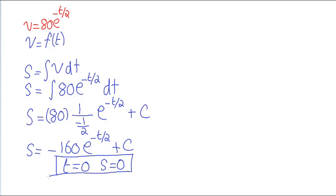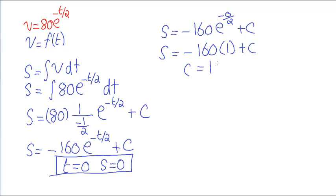So, we have S is equal to minus 160, E to the minus 0 over 2 plus C. Remember, anything to the power 0 is 1. So, S is equal to minus 160, E to the power 0 over 2 is going to be 1. So, C is equal to 160.